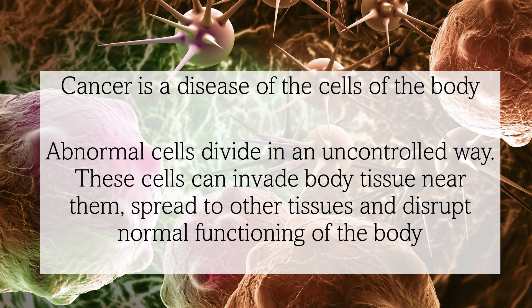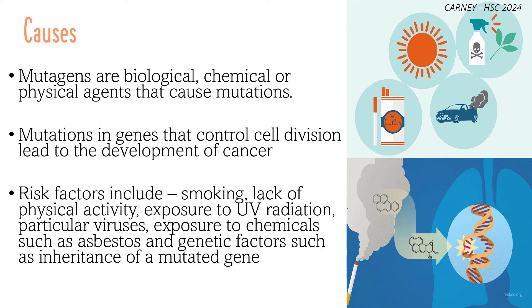Cancer is a disease of the cells of the body. Abnormal cells divide in an uncontrolled way, and these cells can invade body tissue near them, spread to other tissues, and disrupt normal functioning of the body. Mutagens are biological, chemical, or physical agents that cause mutations. Mutations in genes that control cell division, such as DNA repair genes and tumor suppressor genes, will lead to the development of cancer. Benign tumors are not classed as cancer; however, they can be pre-cancerous if not treated and may lead to cancer. Malignant tumors contain abnormal cancerous cells that replicate quickly and uncontrollably, causing nutrients essential to cells to be redirected, and lead to the invasion of surrounding tissue.